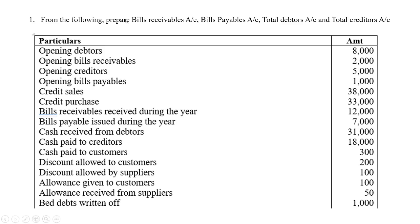The given data includes: opening debtors — opening balance of the debtors account; opening bills receivable — bills receivable account; opening creditors — creditors account; opening bills payable — bills payable account; credit sales — debtors account; credit purchases — creditors account.